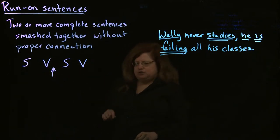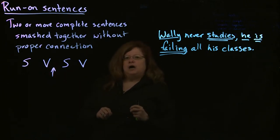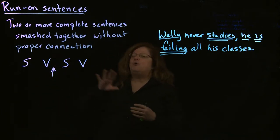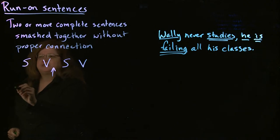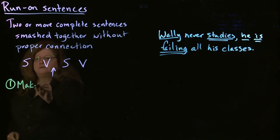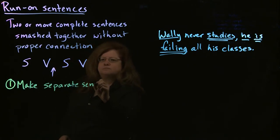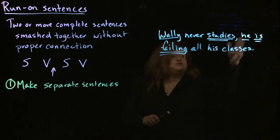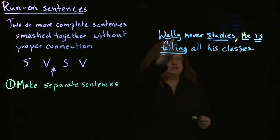So we want to look at how to fix something like this. And because this is English, there's no one single right answer. Depending on what emphasis you want to have in your sentence, you have several choices. The easiest way to fix it is probably to make separate sentences. In this example, 'Wally never studies, he is failing all his classes,' we can change that comma to a period, capitalize 'he,' and now we have fixed the run-on sentence — it's now two separate sentences.